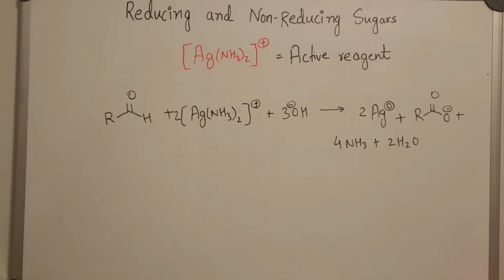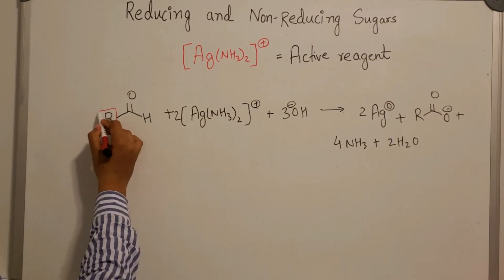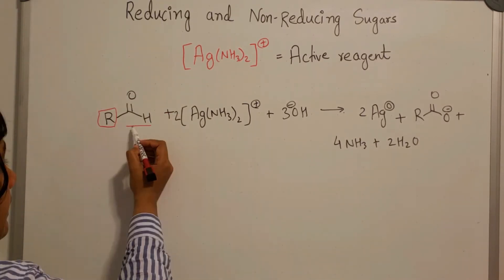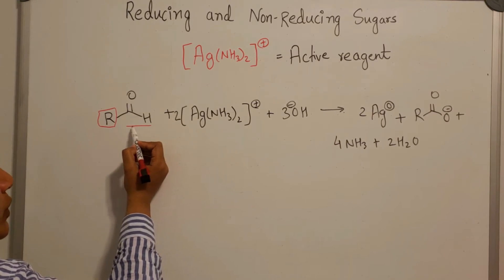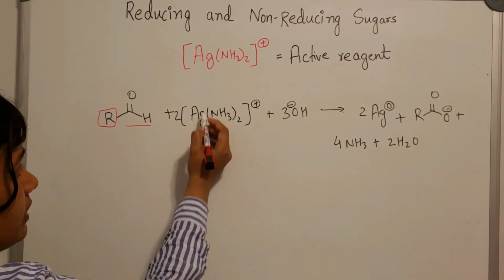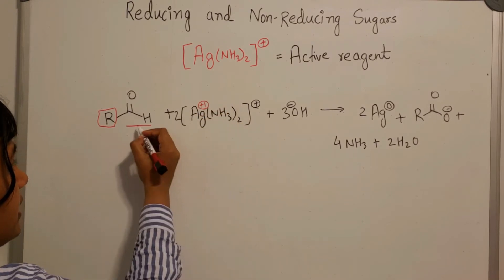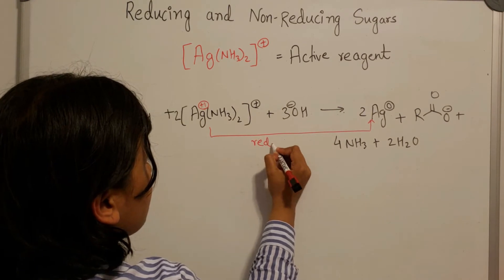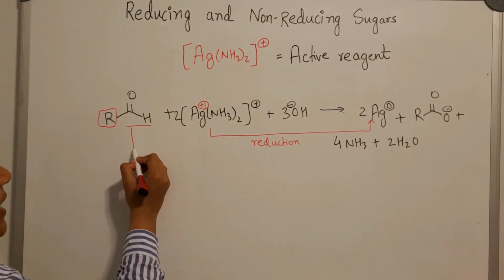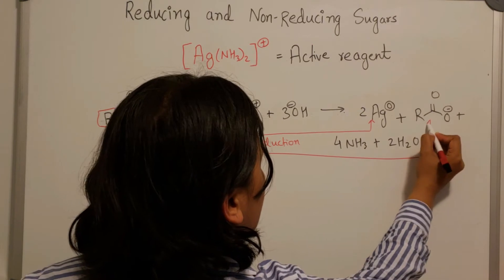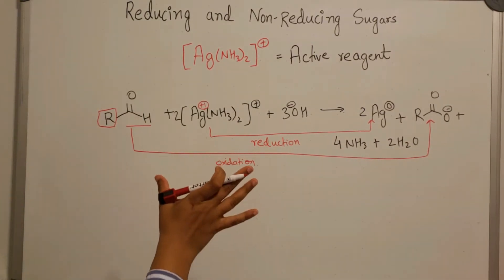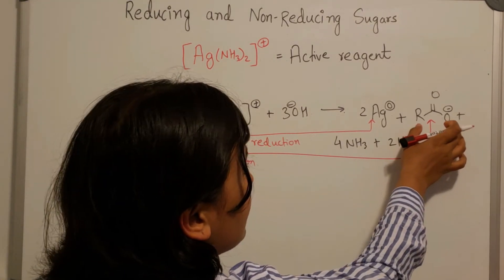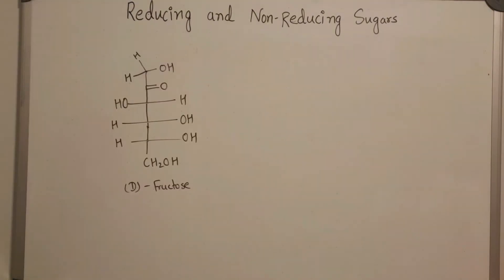Taking an aldose sugar as an example: the aldehyde present at carbon-1 reduces silver from the +1 oxidation state to silver(0). This is the reduction step. At the same time, the aldehyde itself is oxidized into a carboxylate. The overall medium for this test is basic, which is why the carboxylic acid exists in the form of the carboxylate. This explains why aldoses are reducing sugars.